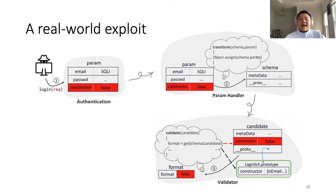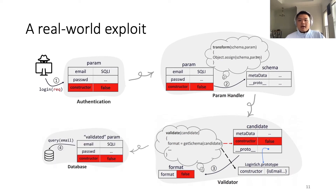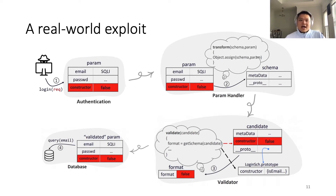To bypass the input validation, we just need to set the format specification as an invalid value so that our second injection payload can escape the check. The last step is much more straightforward: the validated payload then flows into the sensitive database API to finish the entire attack. This is how an entire HPA exploit works.